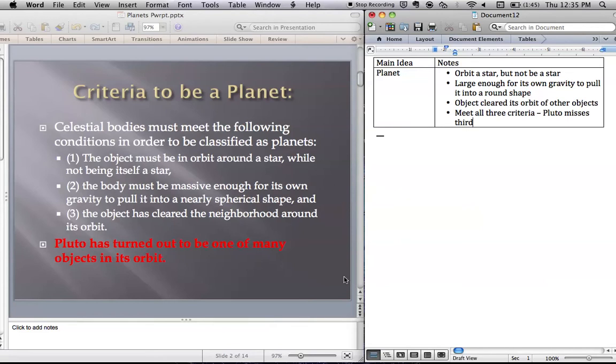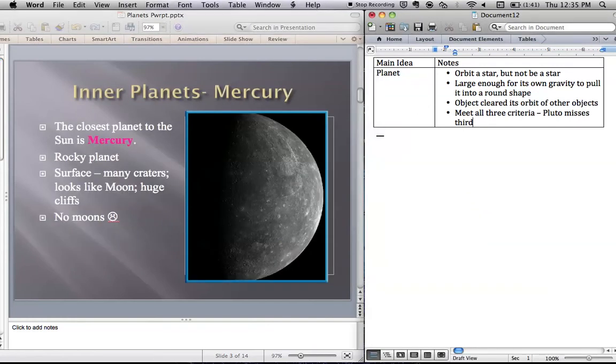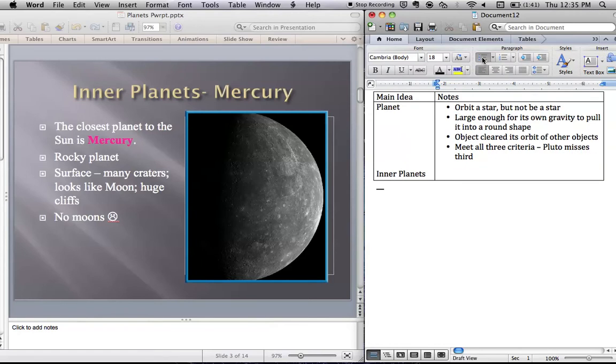So we're going to look at the eight planets quickly starting with the inner planets. We kind of roughly divide the solar system into inner and outer planets and we'll see that they have some things in common. So our inner planets are first.